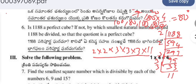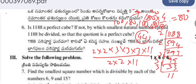Here 3³ is already a perfect cube. The remaining factors 2² and 11 are not present as cubes. So we divide by 2² × 11 = 4 × 11 = 44. If 1188 is divided by 44, it becomes a perfect cube, and the cube root is 3 × 3 × 3 = 27.